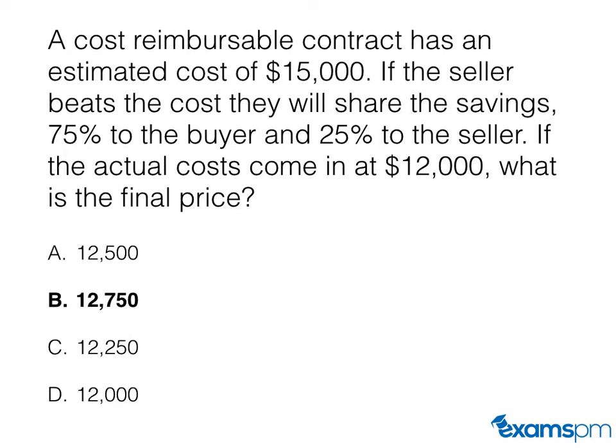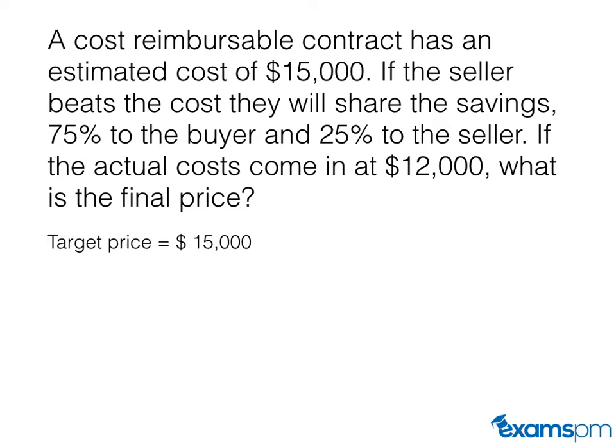The answer is B — $12,750. Before doing any calculation questions on your PMP exam, it's important to list out all of your variables before plugging them into a formula, so you can visually see what information you're given. In this case, the target price is $15,000, the actual cost is $12,000, and the share ratio for buyer and seller is 75/25.